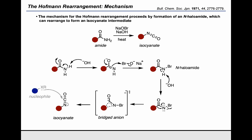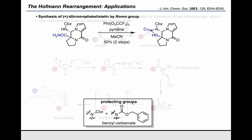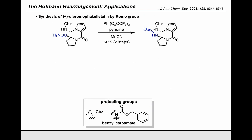Once we've formed our isocyanate, we can react it with a range of nucleophiles — either alcohols, amines, or hydroxide anions — depending on what our ultimate goal is. Now that we're familiar with the mechanism of this transformation, let's talk about some of the synthetic applications that different groups have used this reaction for.